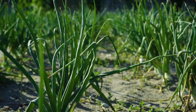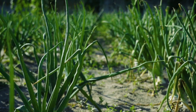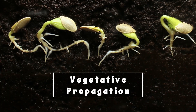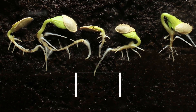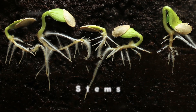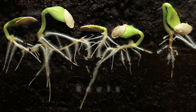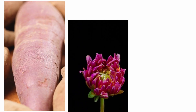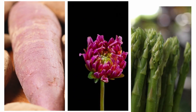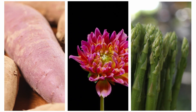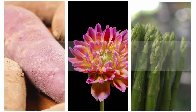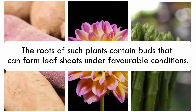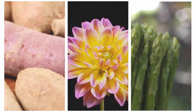Asexual reproduction is how we can clone the best plant of a species. Vegetative propagation is a form of reproduction using the leaves, stems, or roots of the parent plant. Sweet potatoes, dahlias, and asparagus are all reproduced through tuberous roots. The roots of such plants contain buds that can form leaf shoots under favorable conditions.